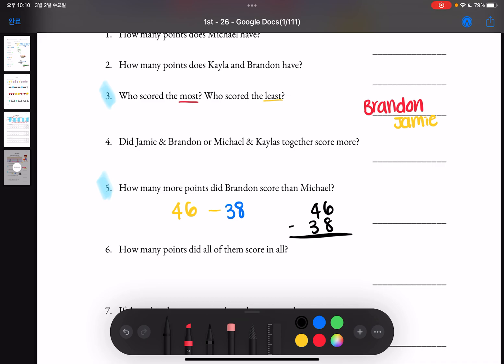And when we do that we can use a vertical method, 46 minus 38. And you'll do 6 minus 8 first, but because you can't do 6 minus 8 you'll borrow 10 from 40. So 40 is going to become 30 and 6 will become 16. 16 minus 8 is equal to 8 and 3 minus 3 is 0. So we know that Brendan scored 8 more points than Michael.